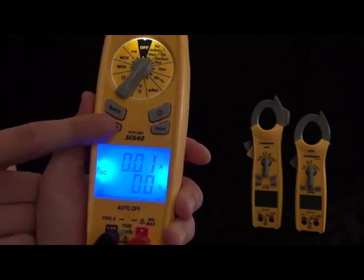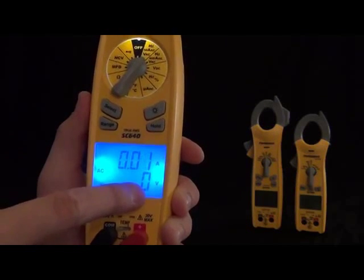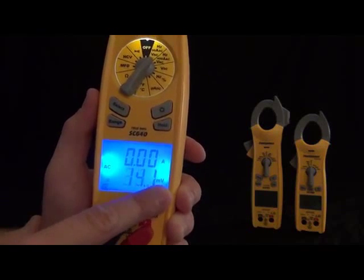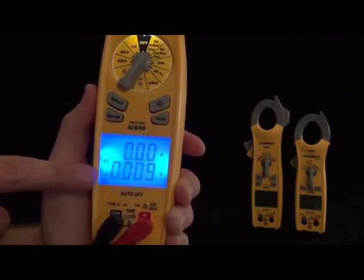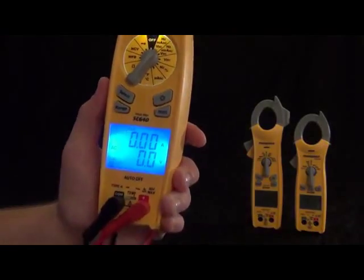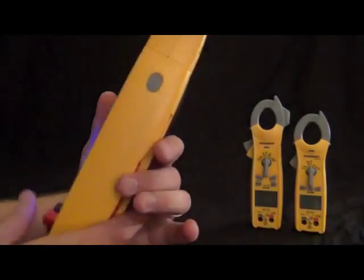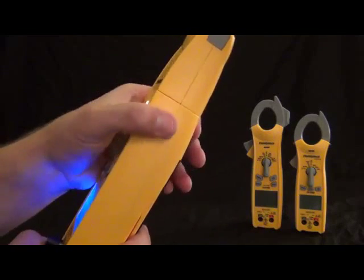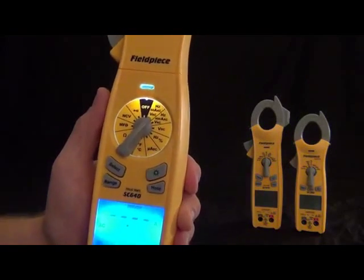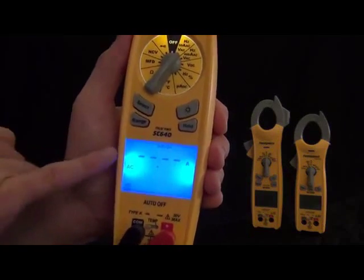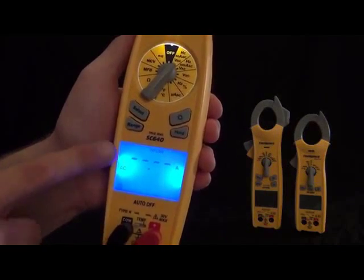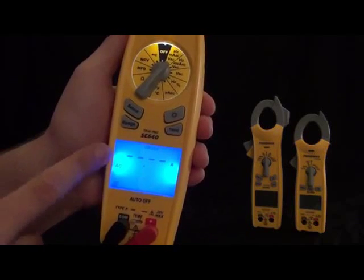Then we have the hold feature, so you can hold it, unhold it. And on the side, we have inrush current, so this puts it into inrush mode. When you're in the amps, the hertz and the amps, either one of these ranges, you can put it into inrush mode. What this is for is when you're doing compressor start-ups, you can see exactly how many amps it took to get that compressor going, or any motor for that matter. You can also select the range on this by turning the switch position for a higher range for motors that require that much amperage.